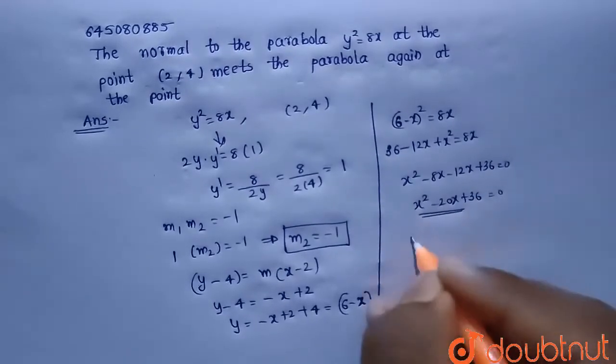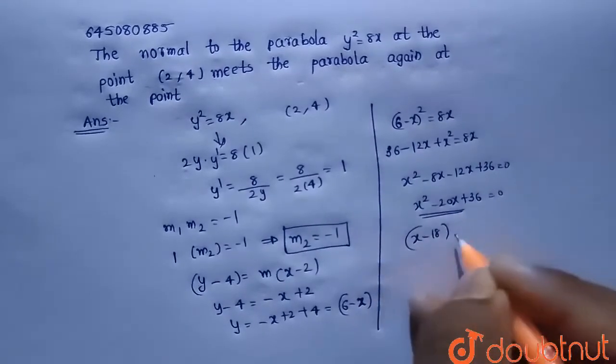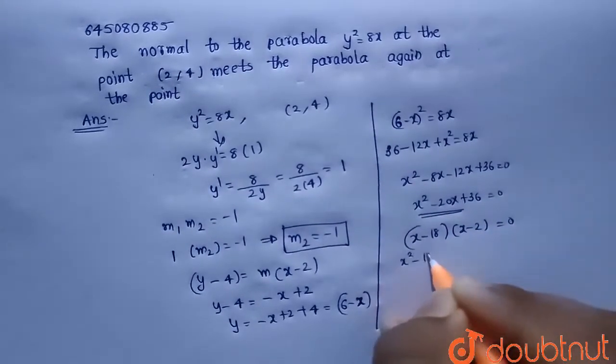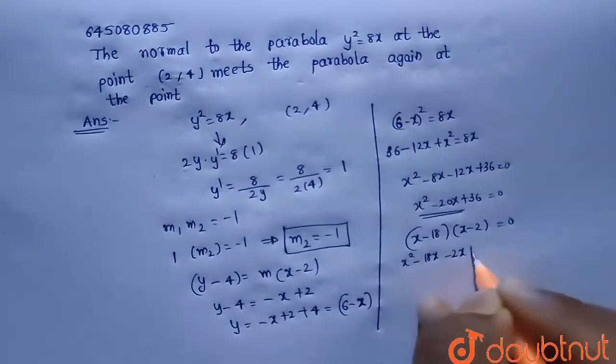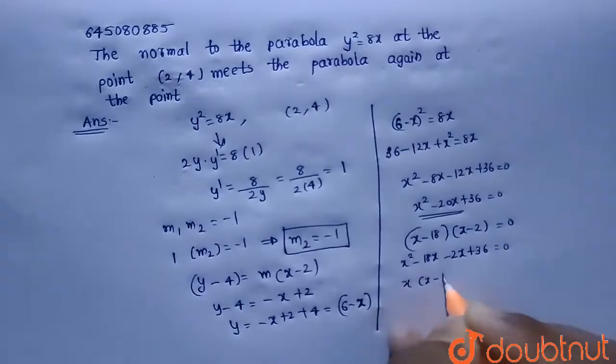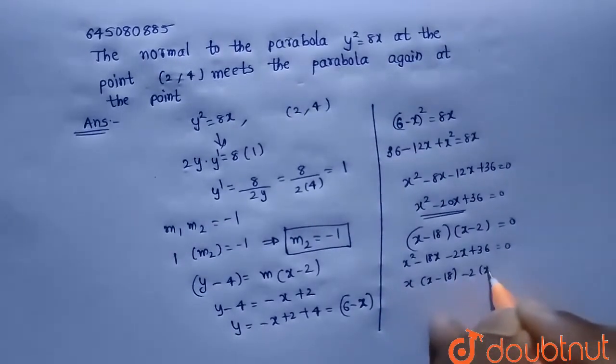So this can be written as (x - 18)(x - 2). I applied factorization, that is x² - 18x - 2x + 36 = 0. Taking out x common we will get x(x - 18) - 2(x - 18).